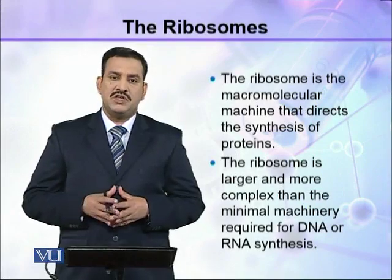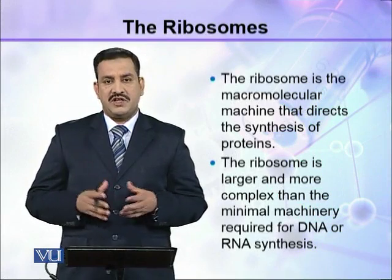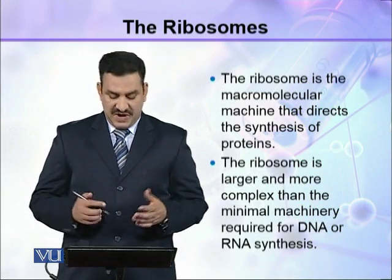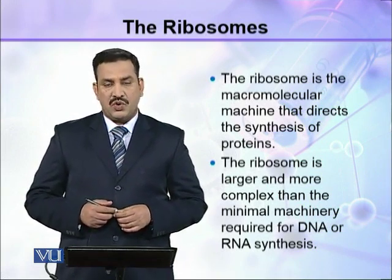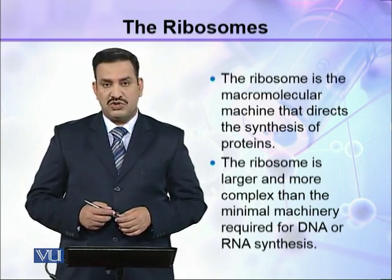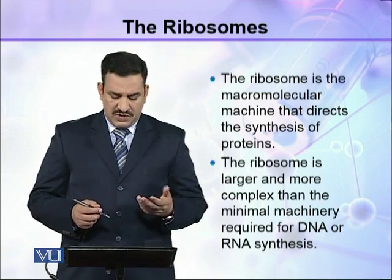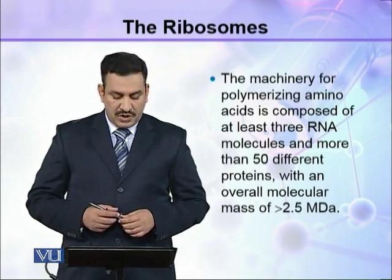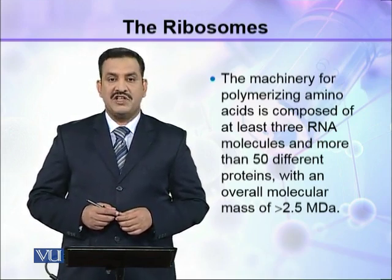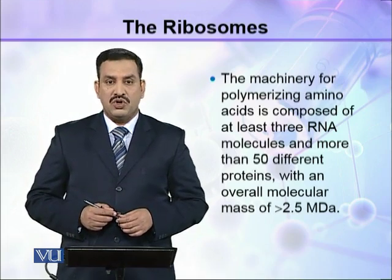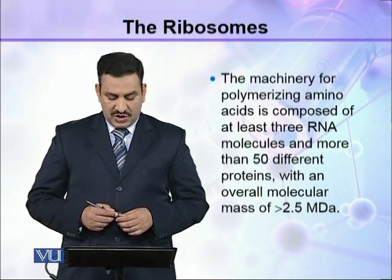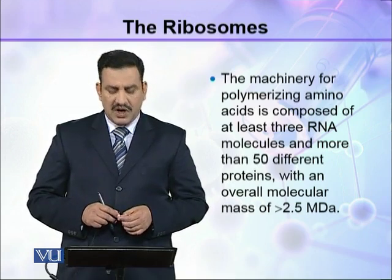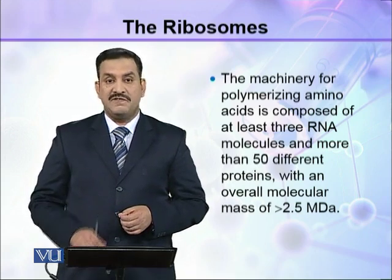The ribosome is the macromolecular machine that directs the synthesis of proteins. The ribosome is large and even more complex than the minimal machinery required for RNA or DNA synthesis, that is in replication of DNA or RNA. The machinery for polymerizing amino acids is composed of at least 3 RNA molecules and more than 50 different types of proteins, and overall these RNAs and proteins make an overall molecular mass of more than 2.5 megadaltons.